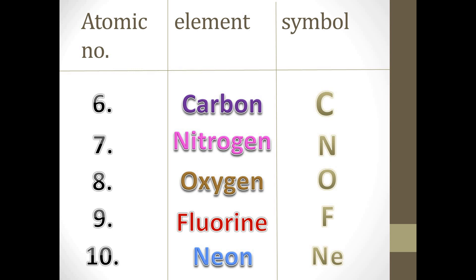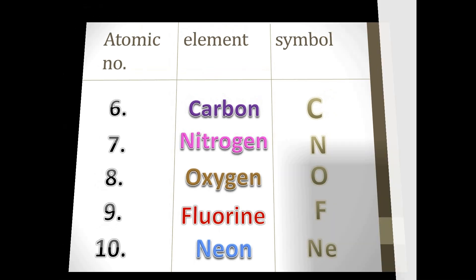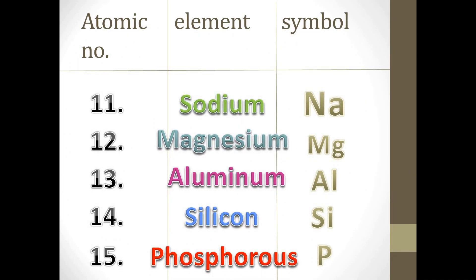The sixth element is Carbon and its symbol is C. The seventh element is Nitrogen and its symbol is N. The eighth element is Oxygen and its symbol is O. The ninth element is Fluorine and its symbol is F. The tenth element is Neon and its symbol is Ne. The eleventh element is Sodium and its symbol is Na.